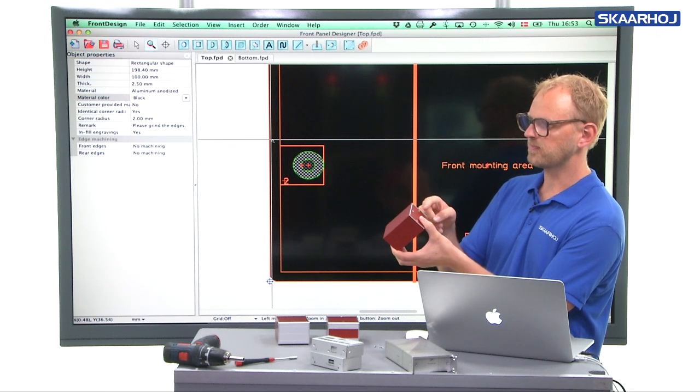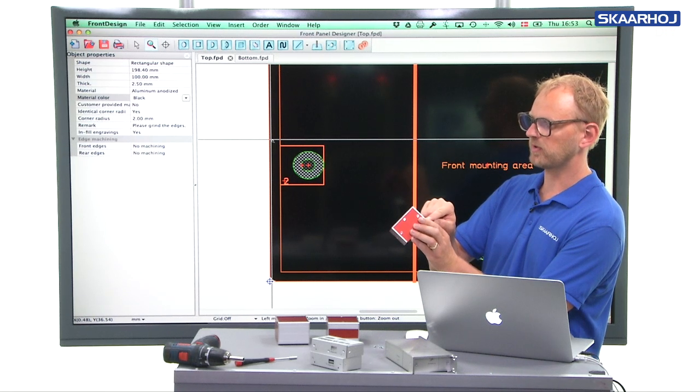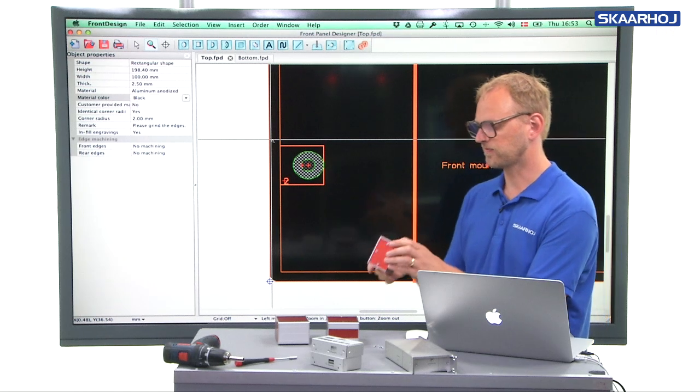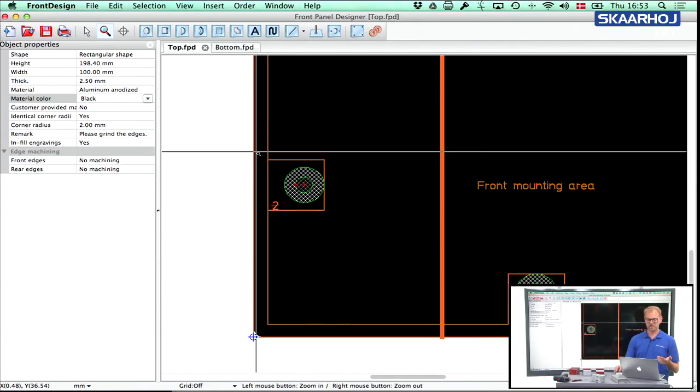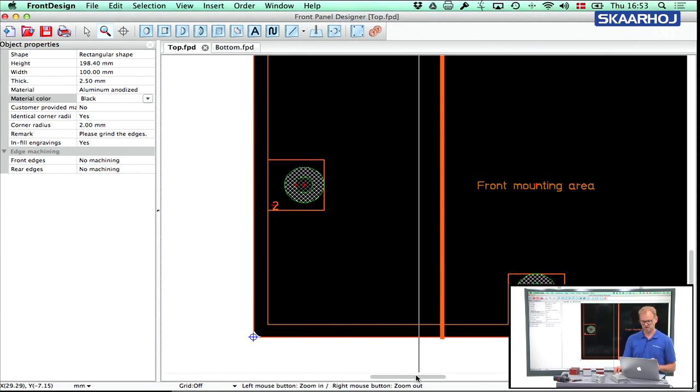You can also see how far the bottom side will extend because basically on the front side here, the bottom U shape will of course take 2.5 millimeter along the edges. That's kind of obvious, but so that you don't forget it, it's useful that you have these guiding engravings to help you.